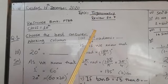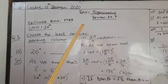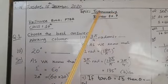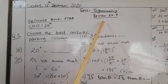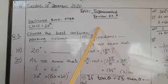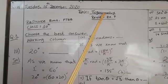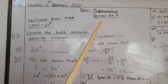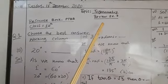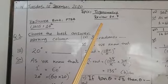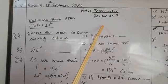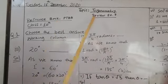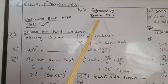Trigonometry is a branch of mathematics in which we discuss the measurement of three-sided shapes, especially right angle triangles. This branch of mathematics helps us to find the height or the angle of objects which are very far away from us and approximately impossible to measure without using this.